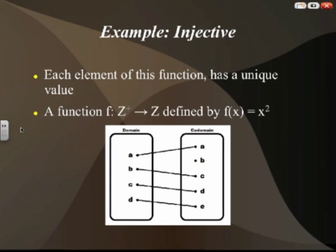In this example, the function is defined from all positive integers to integers, defined by f(x) equals x squared. Every value in the domain has a unique codomain value, meaning every input has reached a unique output. An important thing to remember is that an input cannot have more than one output. Additionally, there can be an output that doesn't have a domain value, and that's fine — for a one-to-one function, a requirement is just that every value in the domain must have a unique codomain value.